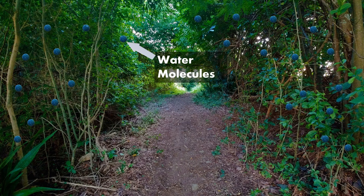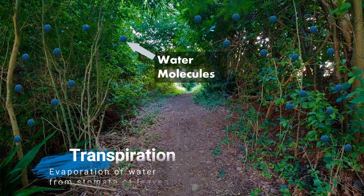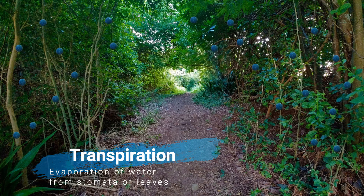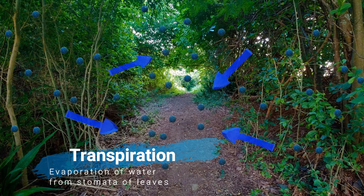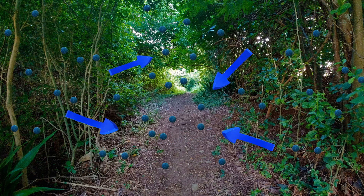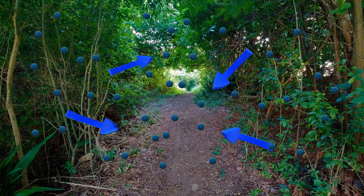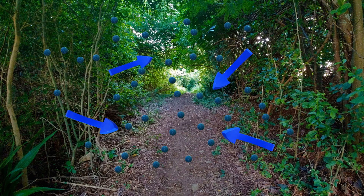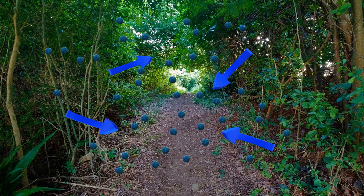Water in the leaves can evaporate and escape via the stomata — this is known as transpiration. Although a loss of water can be a bad thing to a plant if uncontrolled, the open stomata allow carbon dioxide into the leaves for photosynthesis to occur.